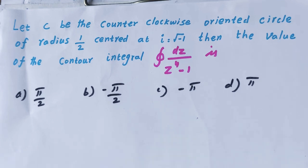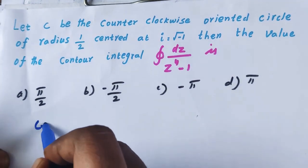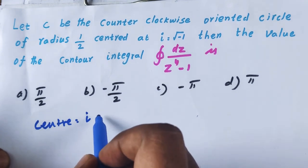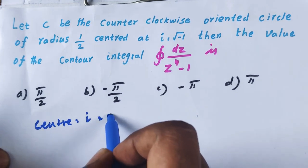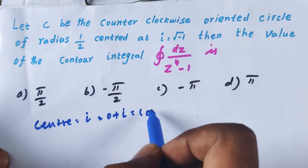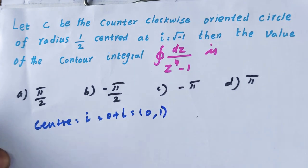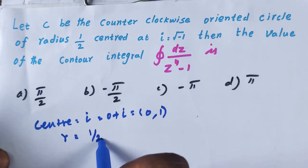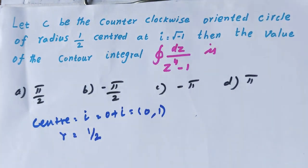So the contour is a circle with center at the complex number i and radius 1/2. The center is at the point i, meaning 0 + i, that is (0, 1). The radius is 1/2 units. The function is 1 divided by z⁴ minus 1.